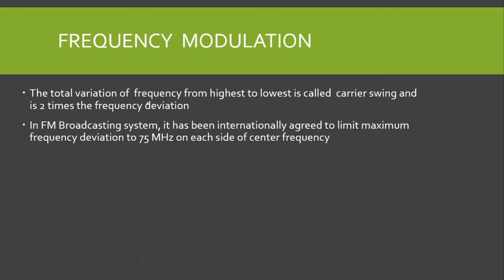The total frequency variation from the highest to the lowest frequency is called the carrier swing. The carrier swing is equal to two times the frequency deviation, because we have one delta f on the upper side and one delta f on the lower side. So the difference between the highest and lowest frequency of variation is 2 delta f.